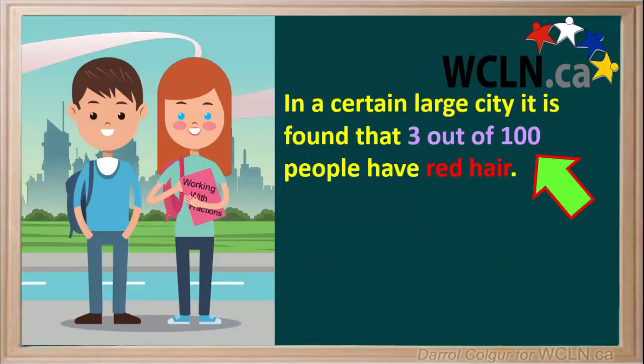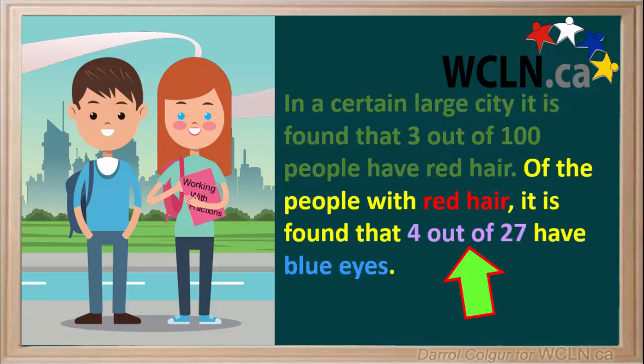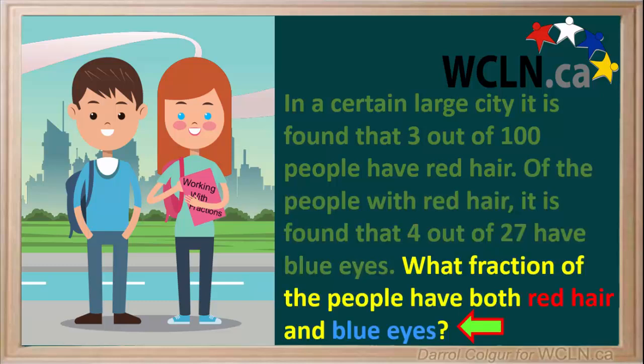Here's another question. In a certain large city, it is found that 3 out of 100 people have red hair. Of the people with red hair, it is found that 4 out of 27 have blue eyes. The question we're asked is what fraction of the people in this city have both red hair and blue eyes.